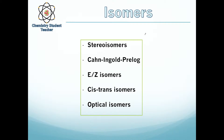This video today is going to be about isomers and the different types of isomers you will come across in chemistry. We will talk about stereoisomers, the Kahn-Ingold-Prelog system, E/Z isomers, cis-trans isomers, and optical isomers. Feel free to skip to the relevant bits if you're not interested in the others or you're a bit confused on one topic.